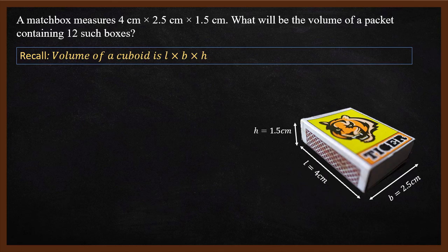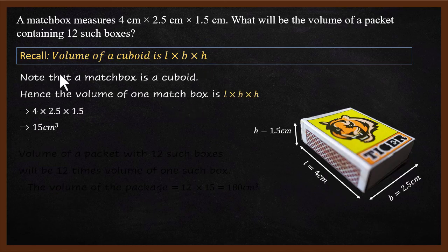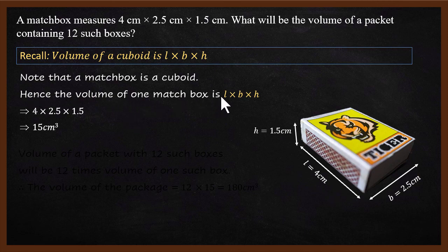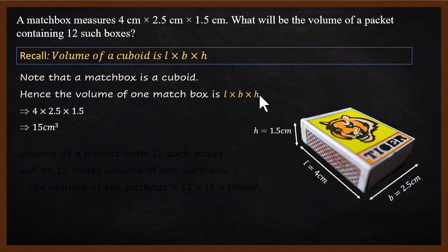The problem is solved using the cuboid volume formula which is L×B×H. Note that a matchbox is a cuboid. Hence, the volume of one matchbox is length multiplied by breadth multiplied by height — that is the cuboid volume formula: length multiplied by breadth multiplied by height.